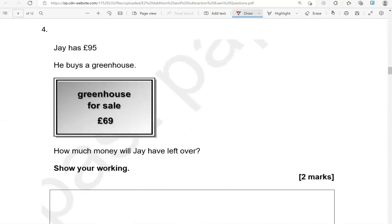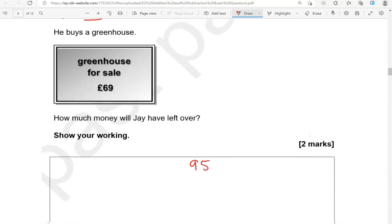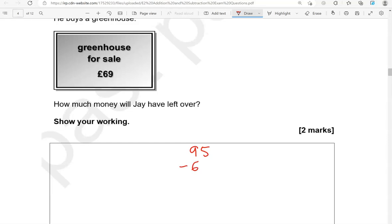Jay has 95 pounds. He buys a greenhouse. Greenhouse for sale, 69 pounds. How much money will Jay have left over? Show your working. So he has 95 pounds, and then he spends 69 to buy the greenhouse. What do we have left?